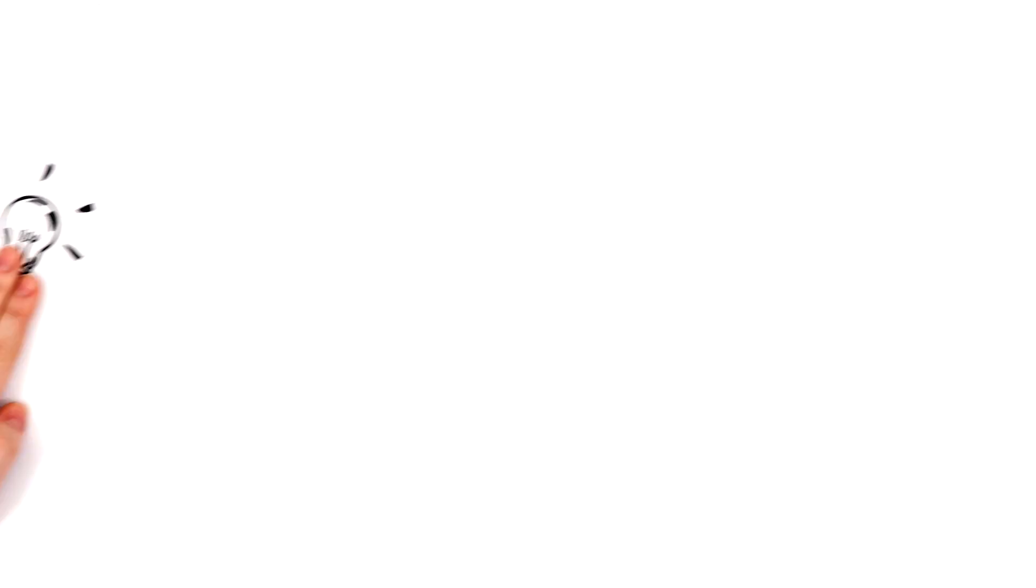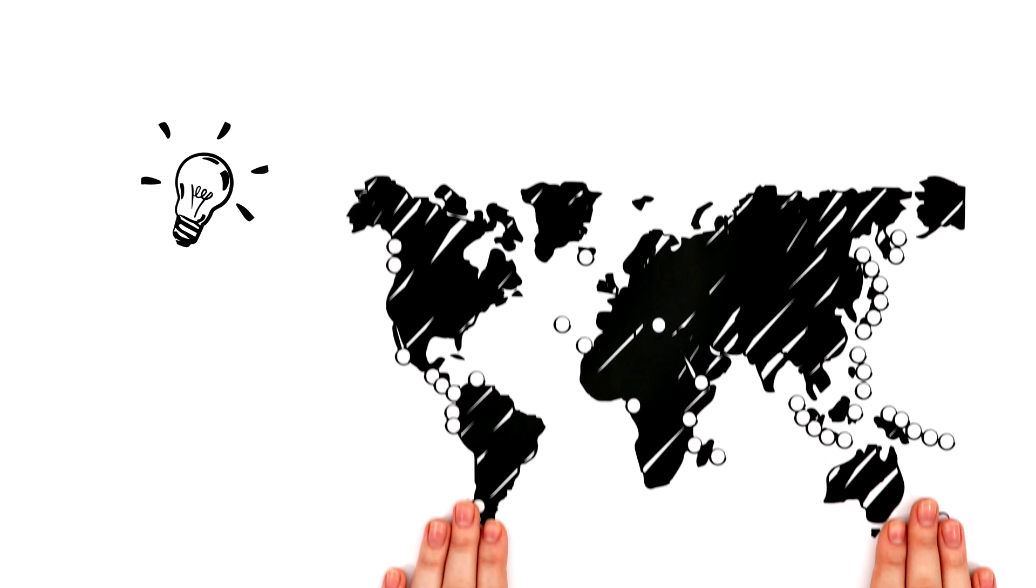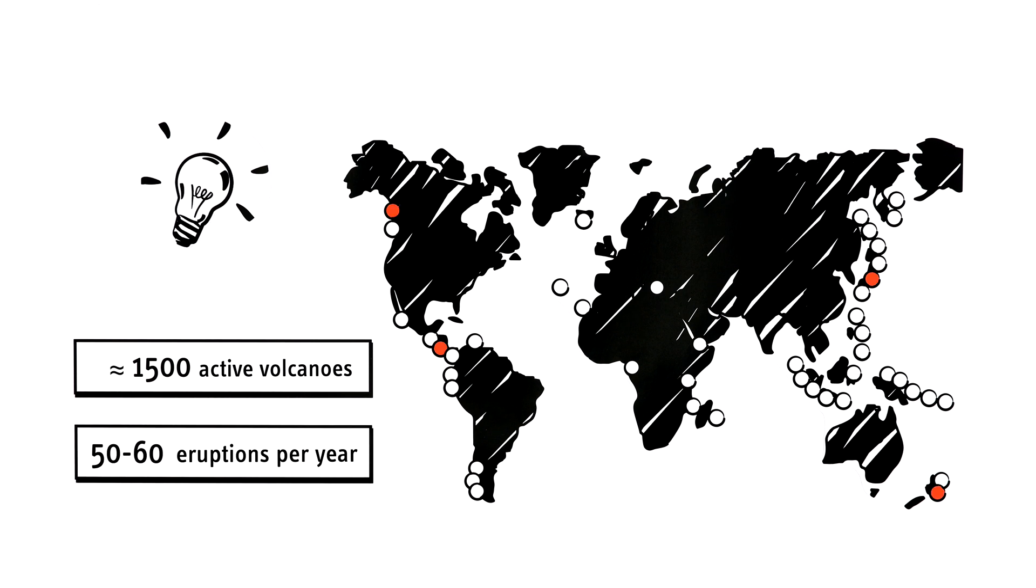By the way, around the world today, there are around 1,500 active volcanoes. These include those that have erupted in the past 10,000 years. Each year, there are around 50 to 60 volcanic eruptions.